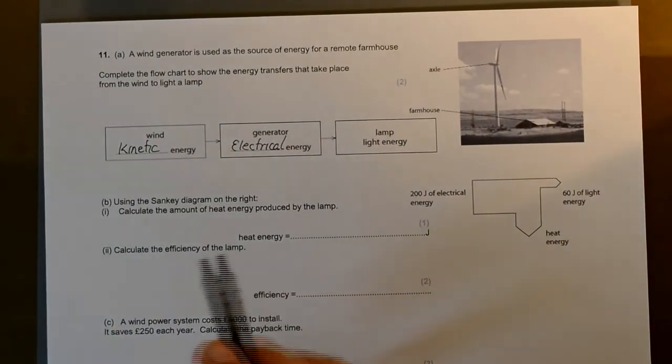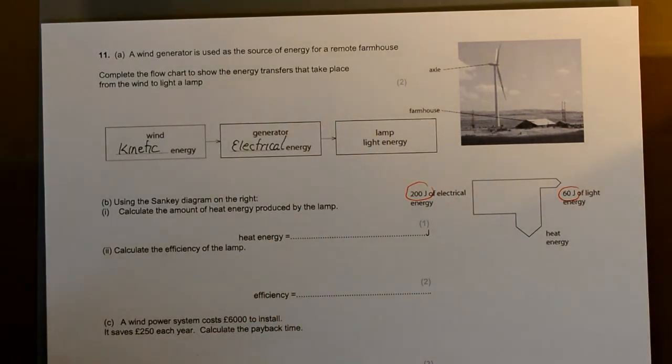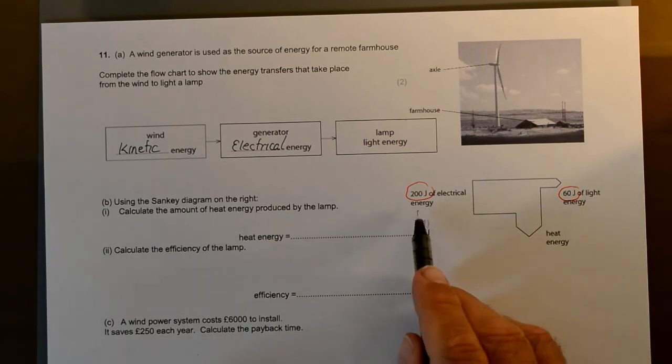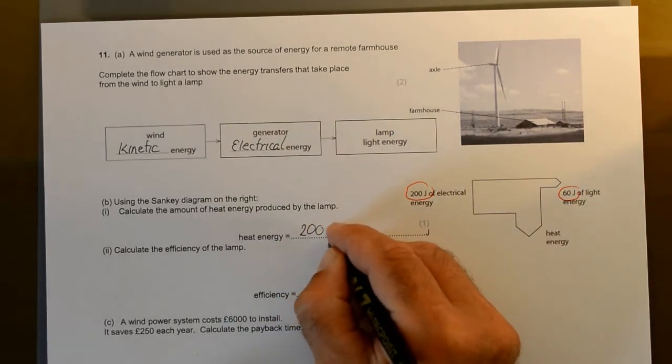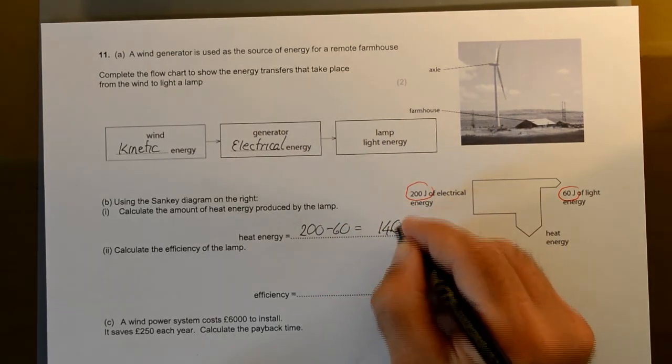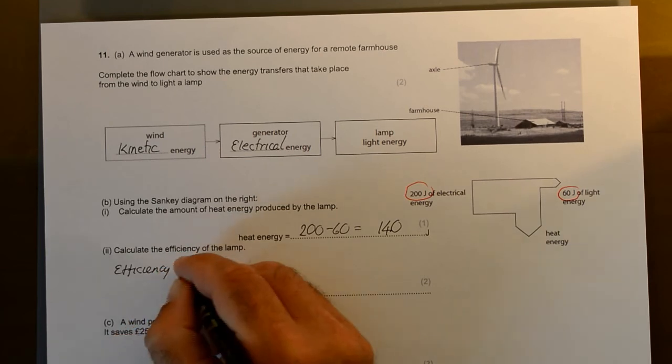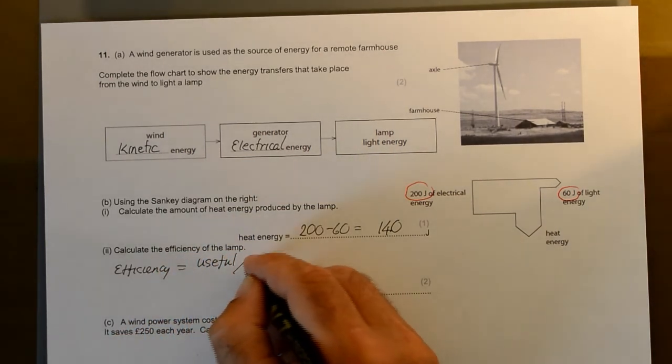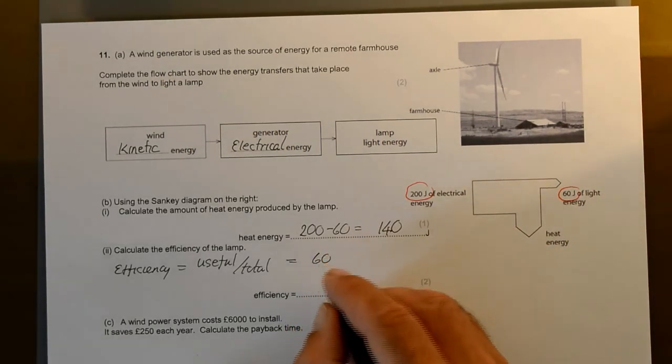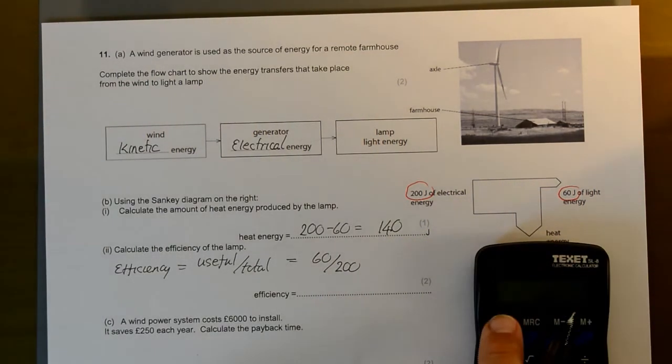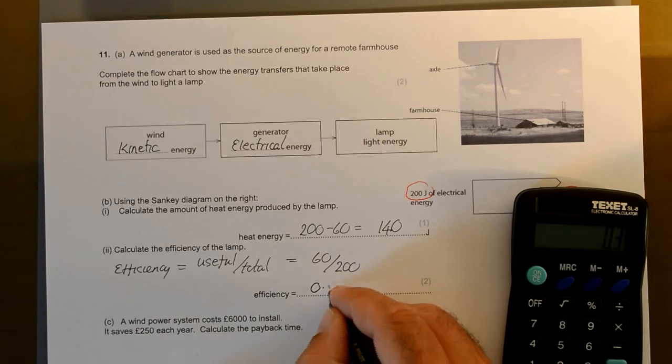Using the Sankey diagram on the right. We've got 200 joules going in, 60 of light, and heat. Calculate the amount of heat energy produced. So we've got 200 in, 60 goes as light. So 200 minus 60. Heat energy equals 200 minus 60, which equals 140. Calculate the efficiency. Efficiency equals useful over total, which equals the useful, presumably we're using it as a light. So the useful is 60 divided by the total, which is 200. That equals 0.3.